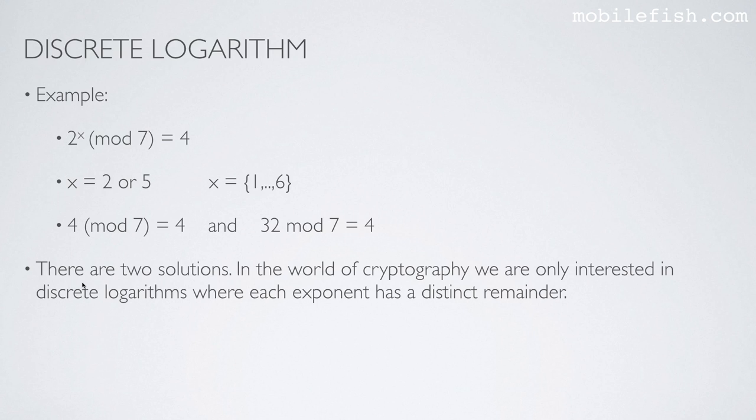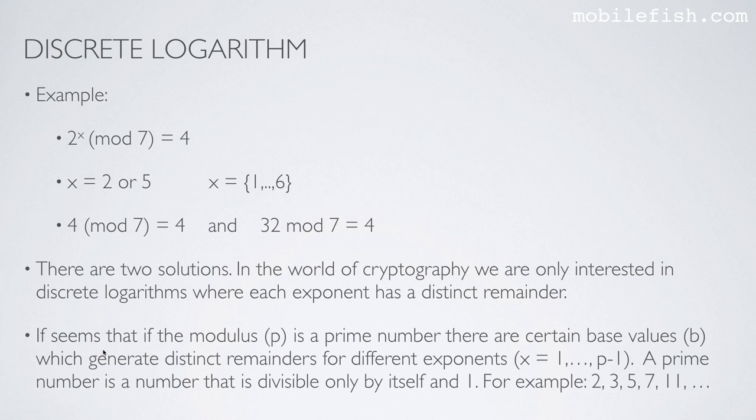In the world of cryptography we are only interested in discrete logarithms where each exponent has a distinct remainder. It seems that if the modulus p is a prime number, there are certain base values b which generate distinct remainders for different exponents. By the way, a prime number is a number that is divisible only by itself and 1. For example, 2, 3, 5, 7, 11, etc.